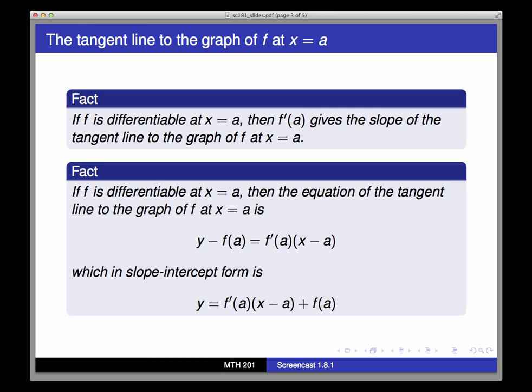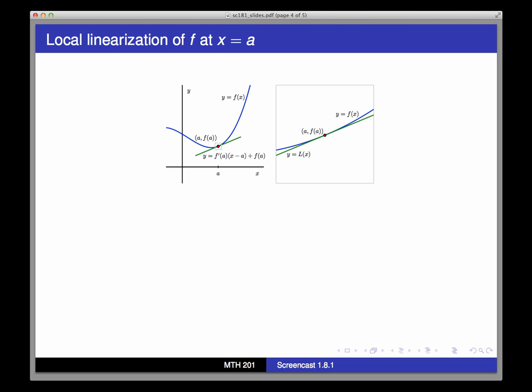Graphically, the tangent line at x equals a is an approximation to the graph of f at x equals a. If we zoom far enough in on the graph of f at x equals a, and if f is differentiable, then the graph of f will look just like the graph of the tangent line.